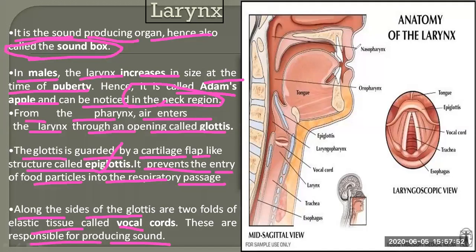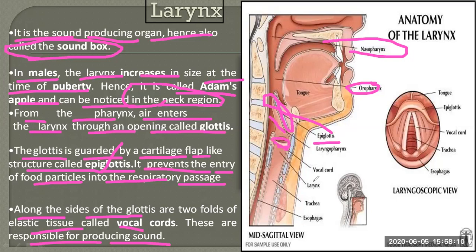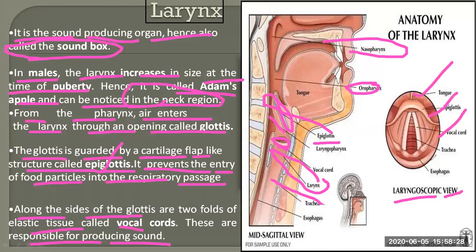Here in the figure: nasopharynx (air passage), oropharynx (food passage), epiglottis — the thin flap cartilage structure — laryngopharynx near the larynx, vocal cords (the sound-producing organ), larynx, trachea (wind pipe), and oesophagus. A laryngoscopic view also shows the tongue, epiglottis, vocal cords, trachea, and oesophagus.